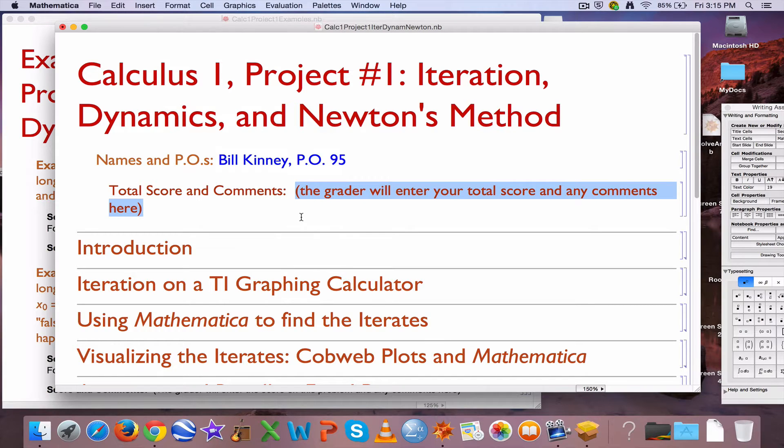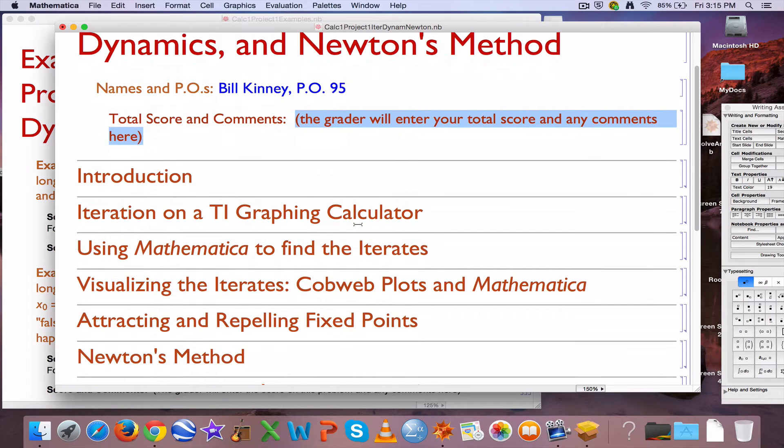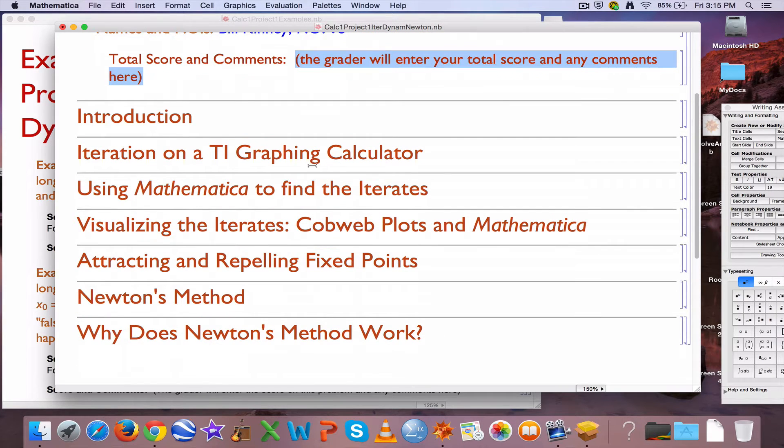So go to text color and go to blue so that the grader knows what you have written. The grader will typically write their responses in red in spots like this where it says the grader will enter your total score and any comments here so that you understand what the grader wrote. So, here's an outline of what this project includes, it includes an introduction which gets into the topic of what is iteration all about, iteration of a function.